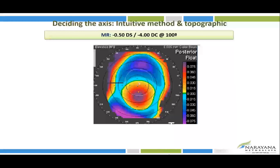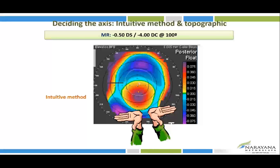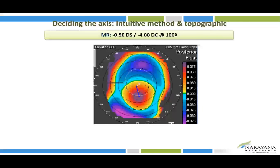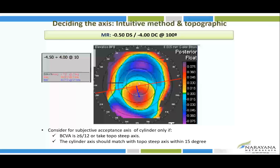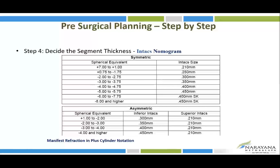Using a posterior elevation map, draw a line from the center of the cone to the corneal vertex — this is the flat meridian or cone displacement. A line perpendicular to it at the center is the steep meridian — that is the incision axis. In one example this gives approximately 10–15 degrees. Verification with plus cylindrical form of subjective refraction confirms approximately 10 degrees, and the steep K axis is approximately 7 degrees — all three methods correlate, so incision at 10 degrees is appropriate.